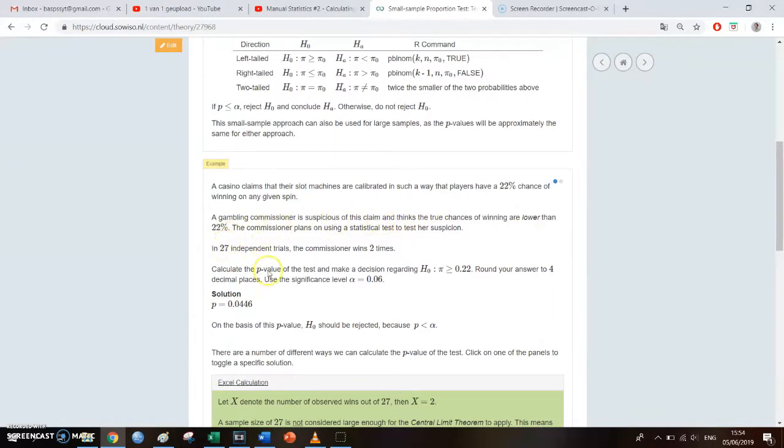In 27 independent trials, the commissioner wins only two times. Calculate the p-value and round off your answer to four decimal places using an alpha of 0.06. Well, the n is 27 and that's lower than 30, so that's why it's considered a small sample size for a population proportion.